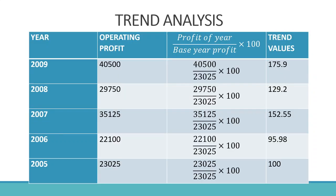The trend analysis table has columns for year, operating profit, and trend values. For 2009, the operating profit was 40,500. The trend value is calculated as: profit for the year divided by base year profit, multiplied by 100. So, 40,500 divided by 23,025 into 100 gives a trend value of 175.9.